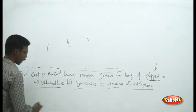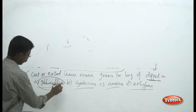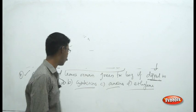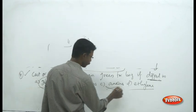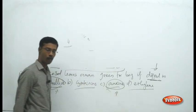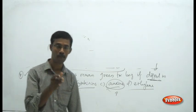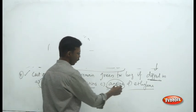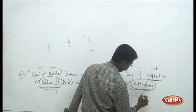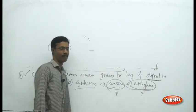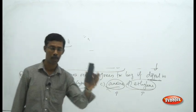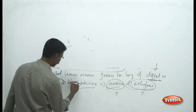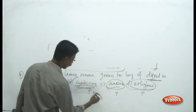Gibberellins acts on seed germination and cell elongation in cell wall formation. Auxins act in apical dominance, promoting growth of the apical region. Ethylene is a somewhat different hormone — it participates in inhibitor action. The answer here is cytokinins.